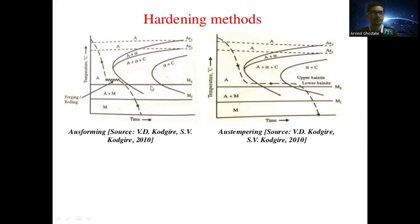In ausforming, the hardening method initially involves sudden cooling of the metal or steel from the Ac3 line down to just above the martensitic start temperature, which is approximately 210 degrees Celsius. For a particular period of time, the temperature remains constant and mechanical treatment is provided — that is forging or rolling — so plastic deformation occurs in the material. After that, the steel is cooled to room temperature by the quenching media.